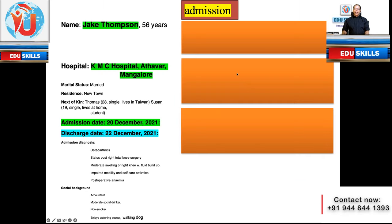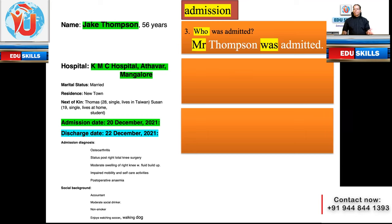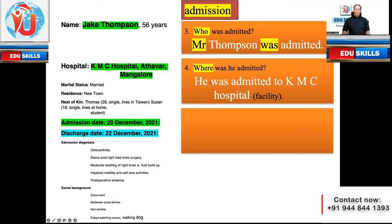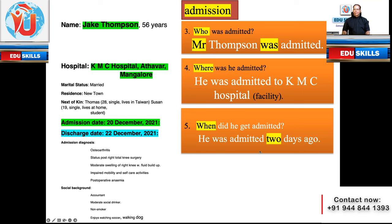Now the next section: on admission. The questions you ask are: who was admitted? Mr. Thompson was admitted. Where was he admitted? He was admitted to CAMC Hospital. When did he get admitted? He was admitted two days ago. You know this because the admission date is 20th December 2021 and the discharge date is 22nd December 2021 — so he was admitted two days ago. That's how you interpret and transform case notes into sentences.